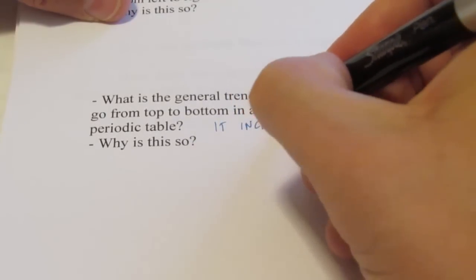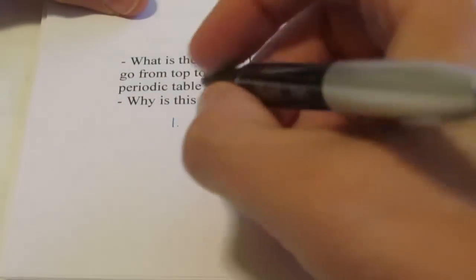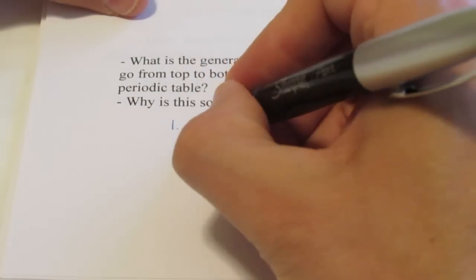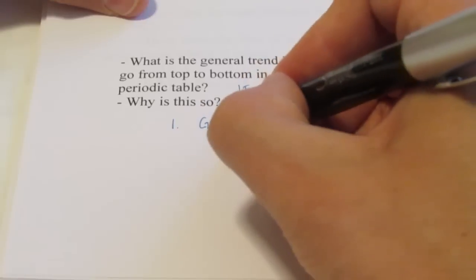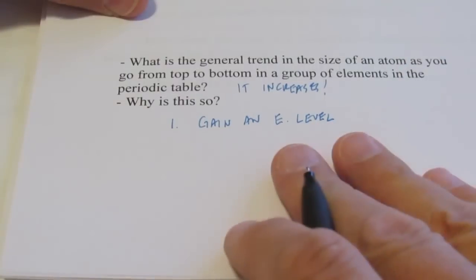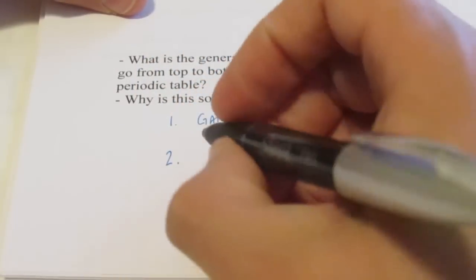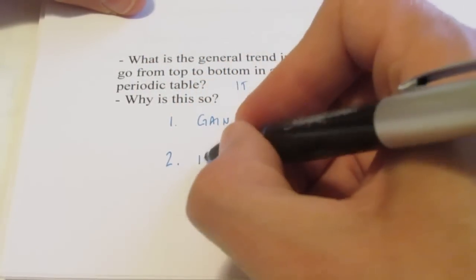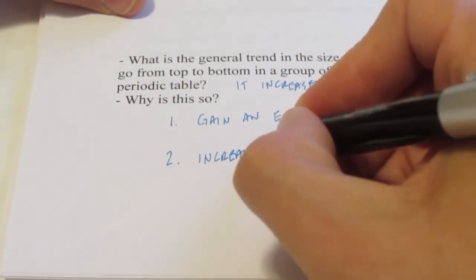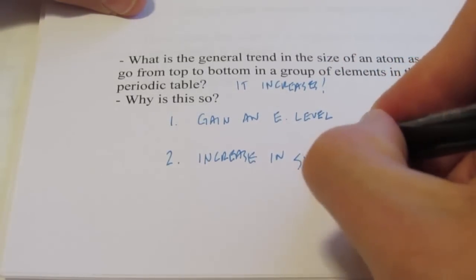Why does the radius increase going down a group? There are two reasons. Number one: when you go down a group, the elements gain an energy level, and those electrons become farther away from the nucleus. Number two: something called an increase in shielding. Let's talk about what both of these mean.